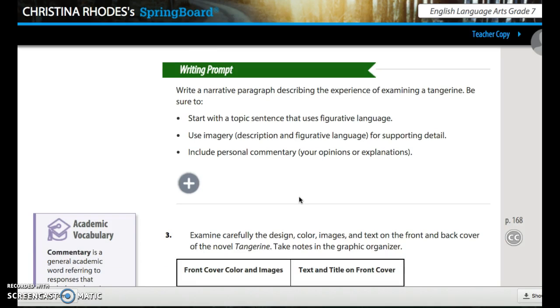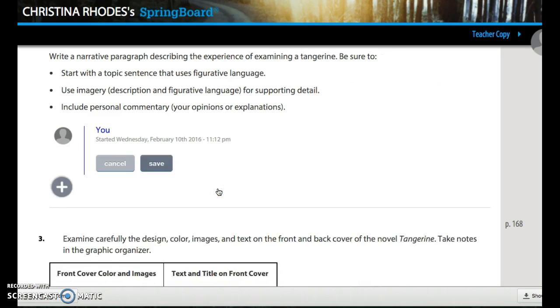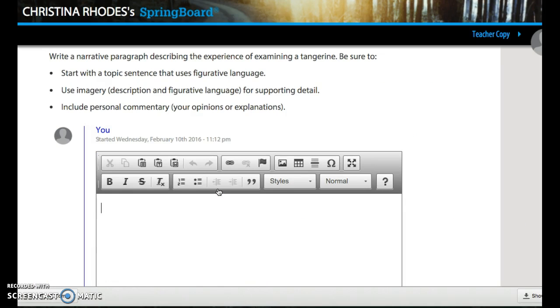So you are going to write a narrative paragraph describing the experience of examining a tangerine. Here are the directions in your notebook, your composition notebook. You are going to write one paragraph. And you need to start with a topic sentence that uses figurative language. So first sentence is the topic sentence. And it needs to use figurative language.